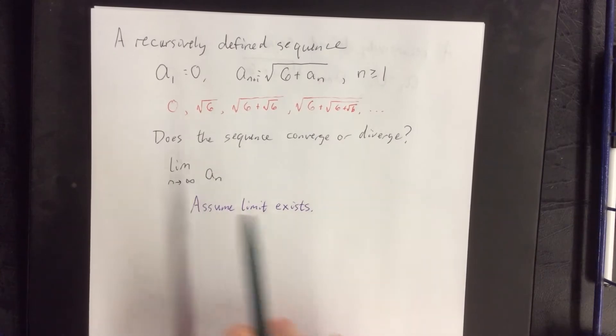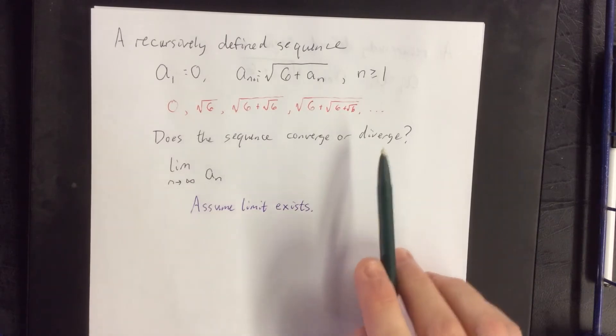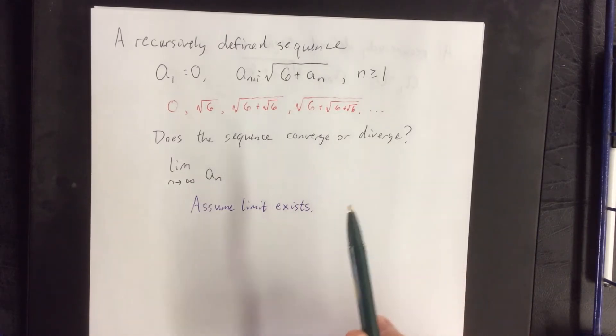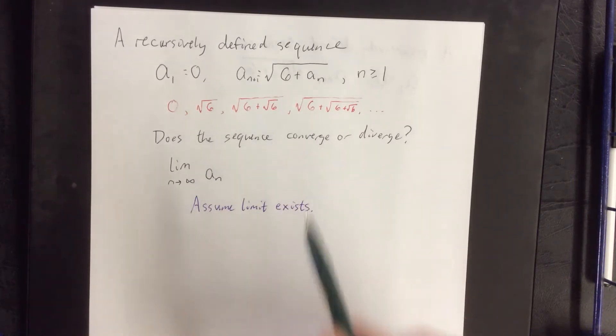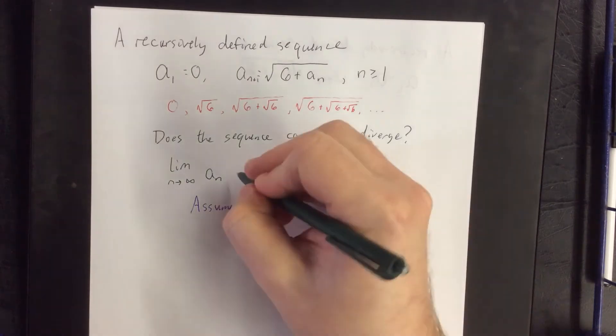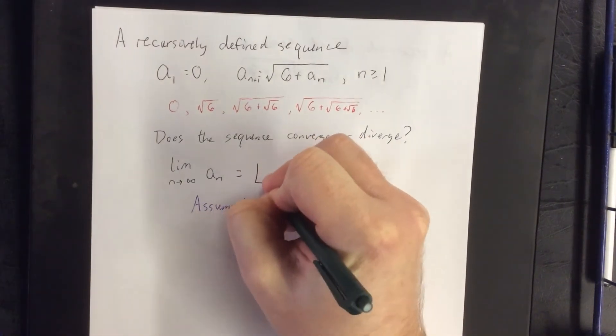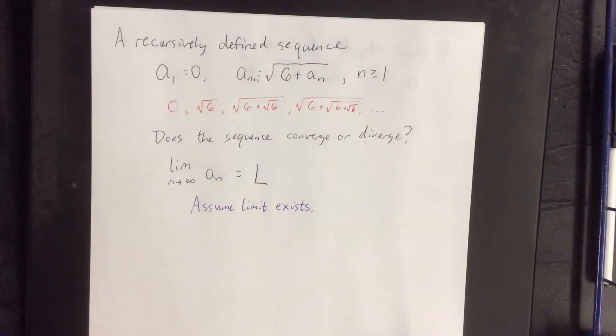If you make an assumption and then wind up with a contradiction, that means that you were wrong with your assumption, therefore the limit does not exist, so the sequence would diverge. Otherwise if you make the assumption and then show what it's equal to, you've proved that the sequence converges. So for just a moment we're going to assume that the limit exists and we're going to call it L.